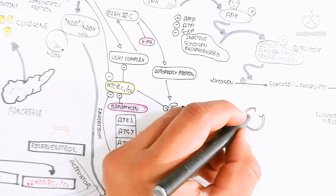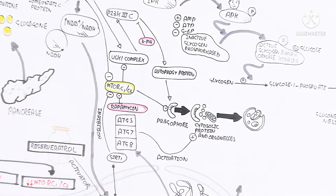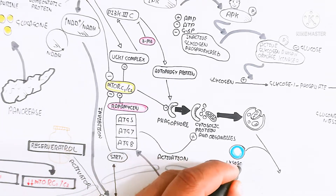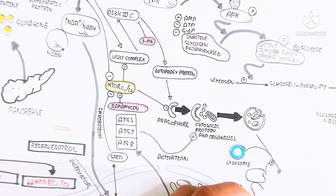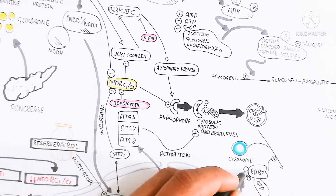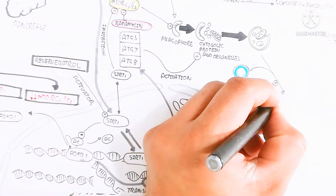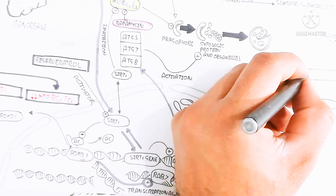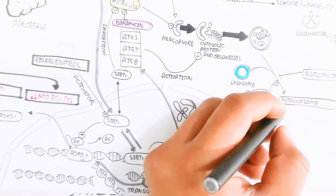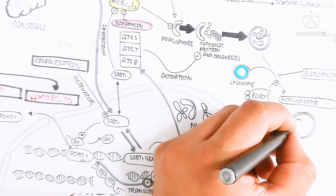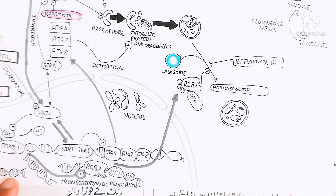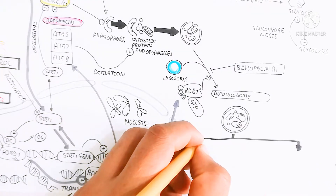Phosphorylation of different proteins leads to autophagy protein formation and phagophore formation. mTORC1 and mTORC2 normally inhibit the phagophore, but since mTOR is inhibited, this inhibition is removed and activation begins. Cytosolic proteins and damaged organelles undergo autolysis. The lysosome then binds — RAB7 protein, activated by GTP, facilitates this binding. Bafilomycin A1 is also an inhibitor of lysosome binding, resulting in autolysosome formation.